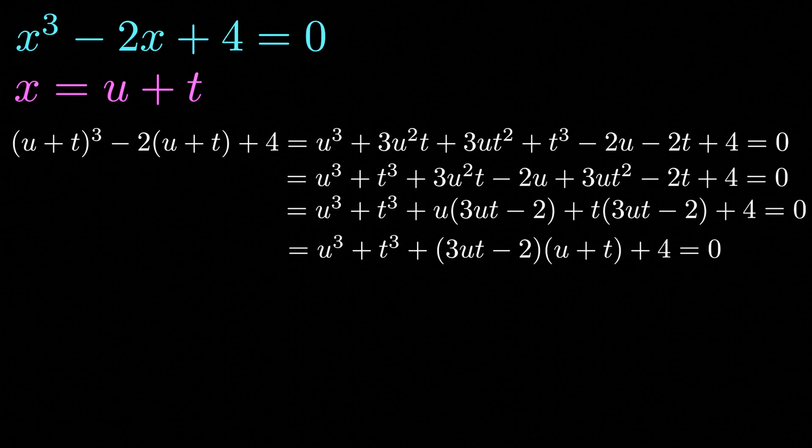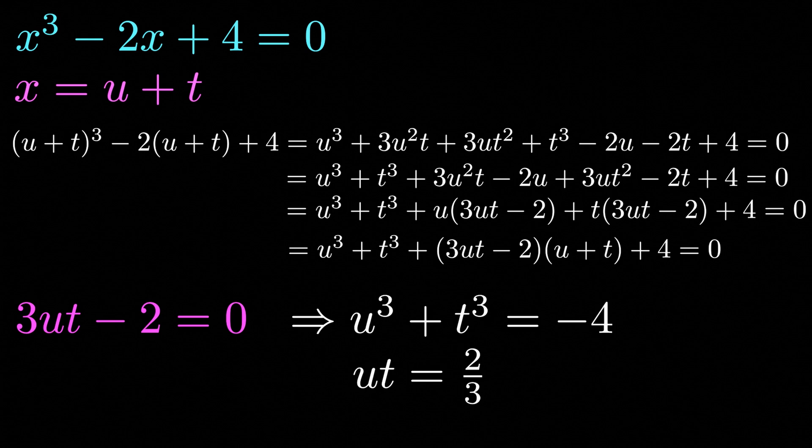What we're going to do is impose our first condition: 3ut minus 2 equals 0. From this we get the following system of equations: u cubed plus t cubed equals minus 4, and ut equals 2 divided by 3. This is why we've made the substitution x equals u plus t, because we now have the following system of two equations.